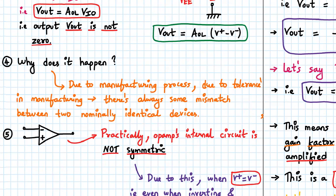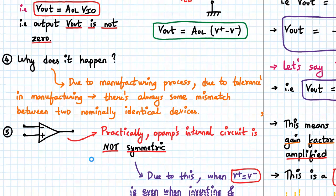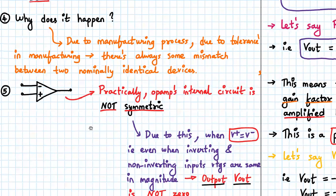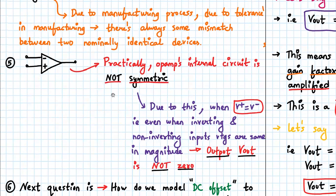You remember, op-amps are made up of several transistors and resistors inside. So there might be mismatches inside the op-amp internal circuitry; it may not be practically symmetric.